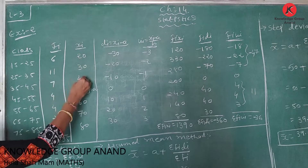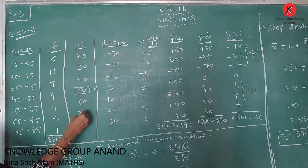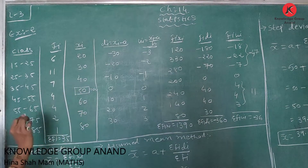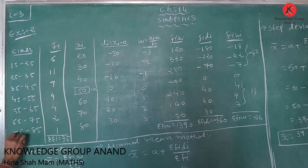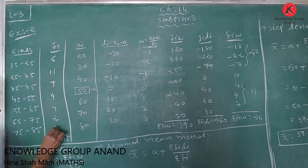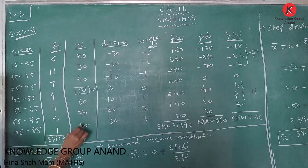Starting with (15+25)/2 = 40/2 = 20. The class size is 10, so we add 10 each time: 20, 30, 40, 50, 60, 70, 80. For the last interval, (75+85)/2 = 160/2 = 80.